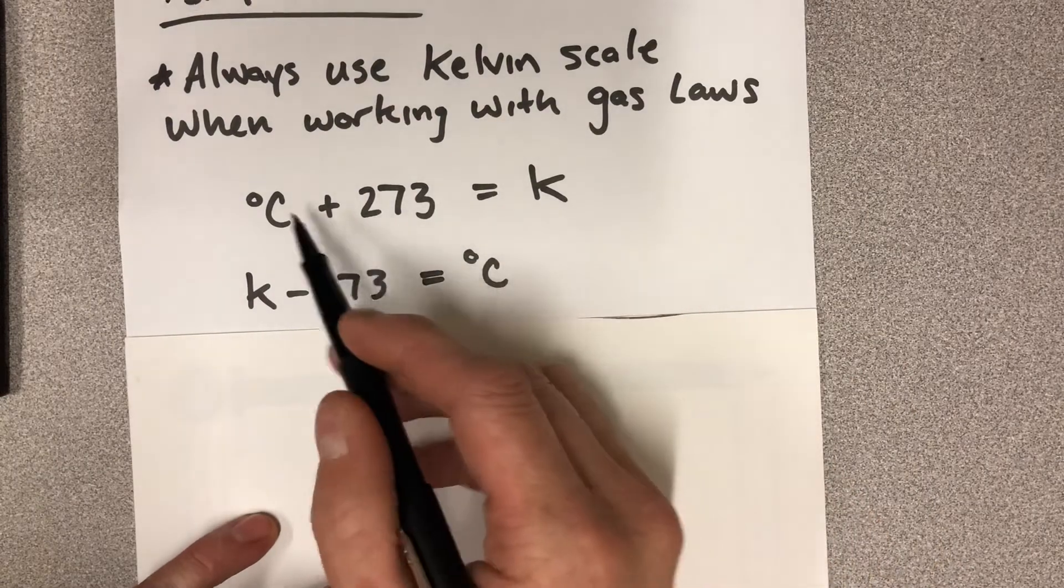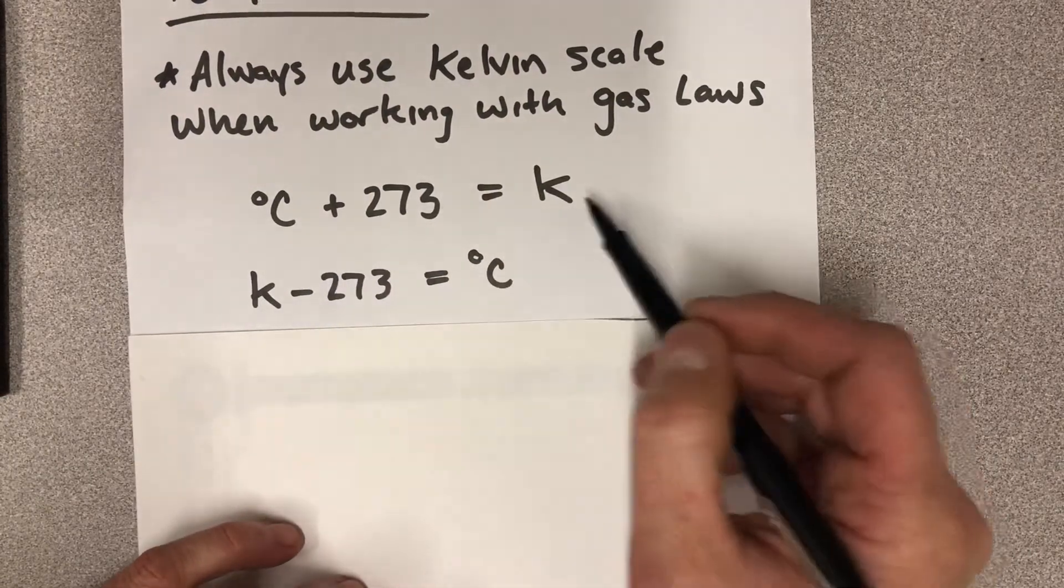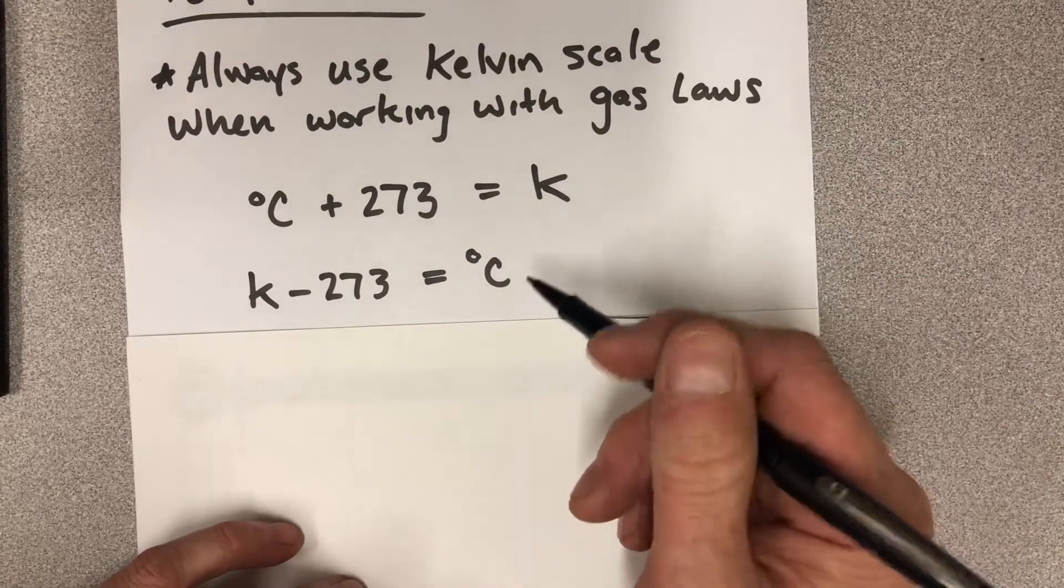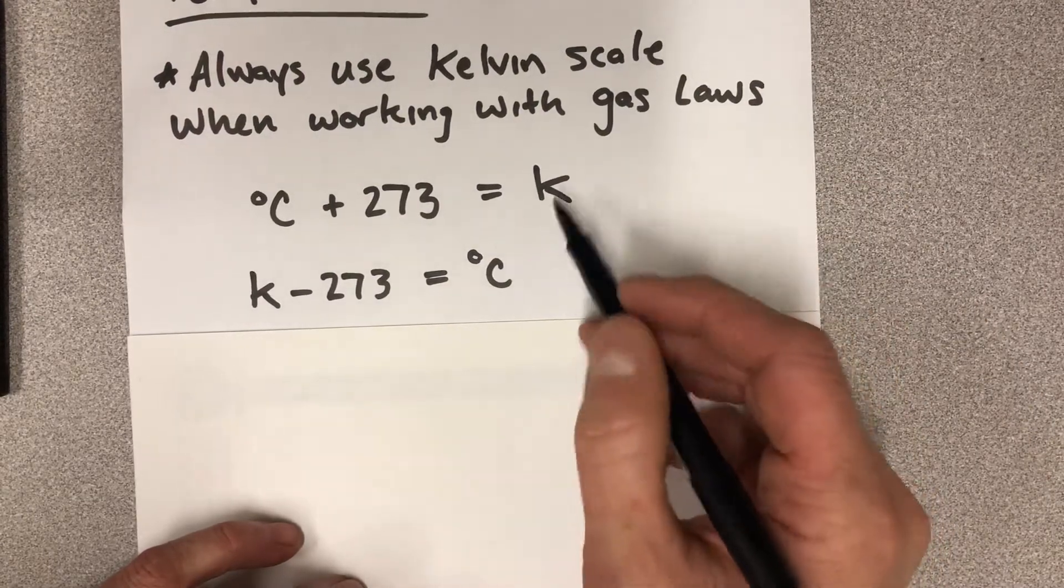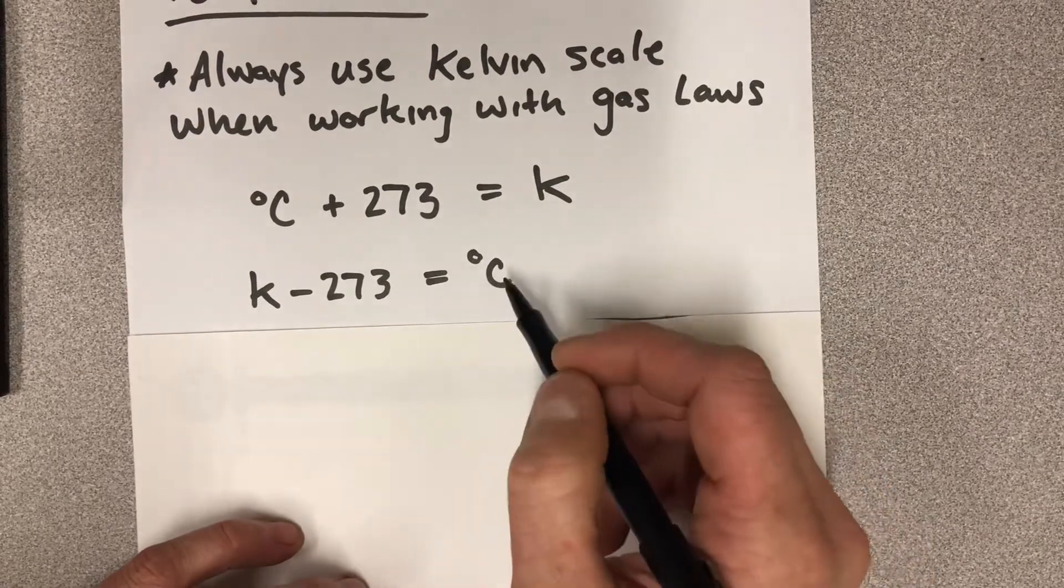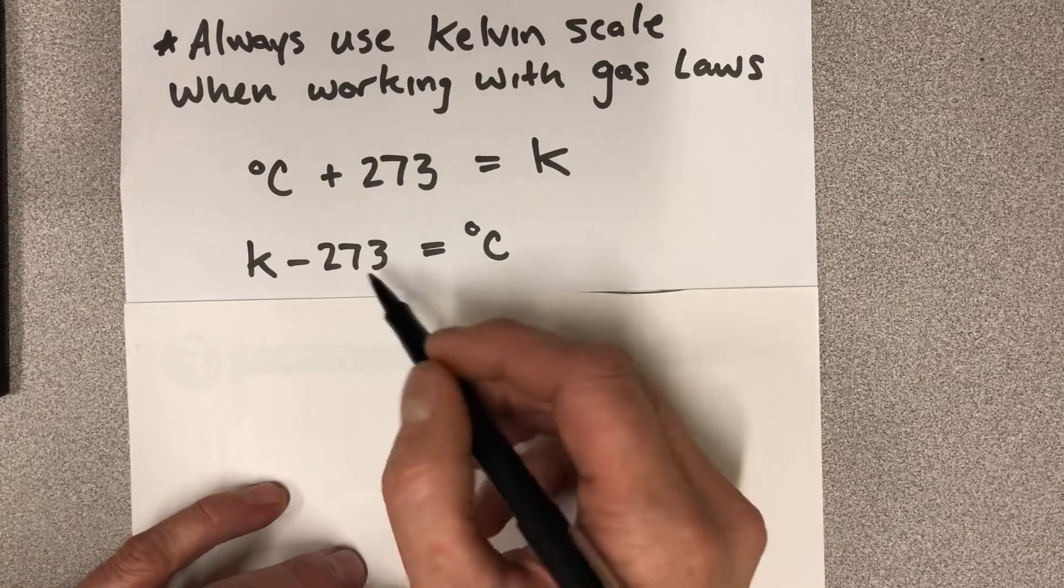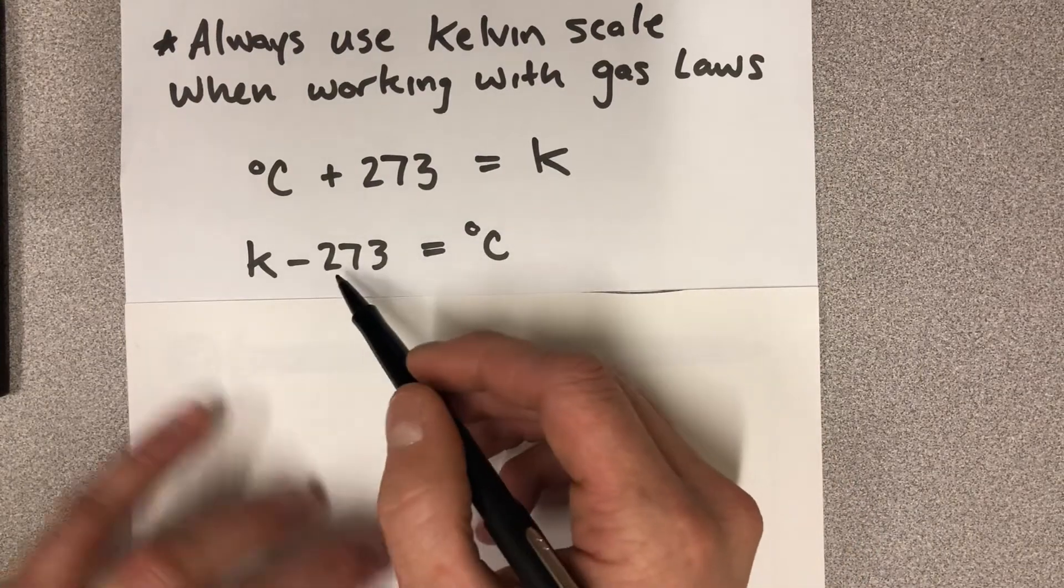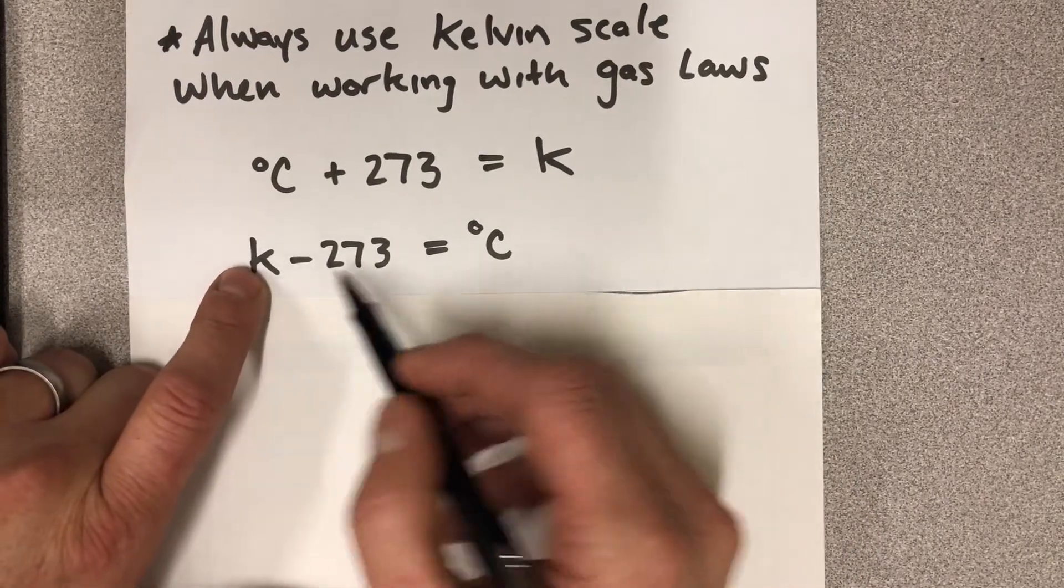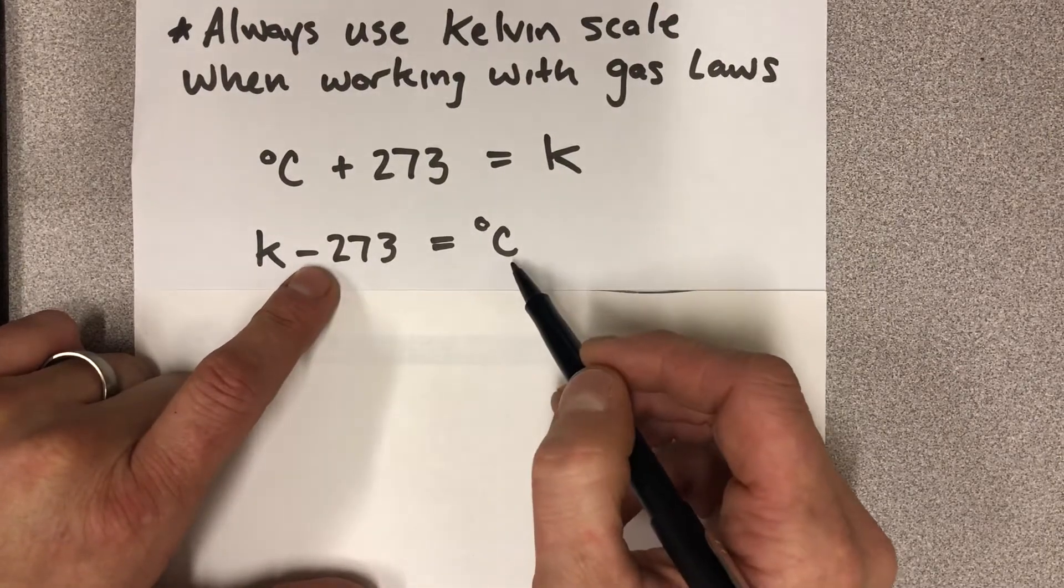The thing to remember is that you have to add 273 to your Celsius temperature to get Kelvin. And that's very common to be given Celsius temperatures in a problem. And then you have to convert to Kelvin to actually plug in temperature values into our equations. And then if for any reason you have to answer a question with a degree Celsius, and you've already solved for a temperature in Kelvin, then you need to take 273 away from your Kelvin temperature to get back to Celsius.